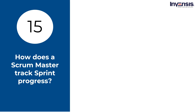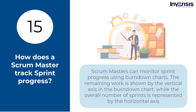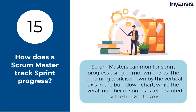How does a Scrum Master track sprint progress? Scrum Masters can monitor sprint progress using burndown charts. The remaining work is shown by the vertical axis in the burndown chart, while the horizontal axis represents the overall number of sprints. Additionally, sprint progress may be tracked using daily Scrum meetings, Scrum retrospectives, sprint planning, escape defects, defect density, and team velocity.